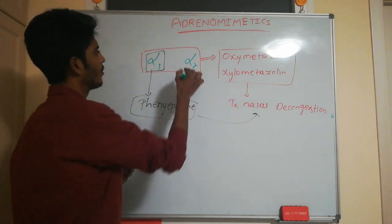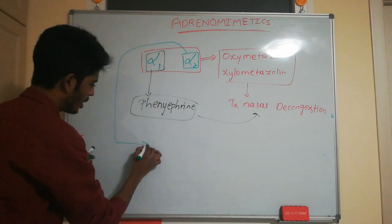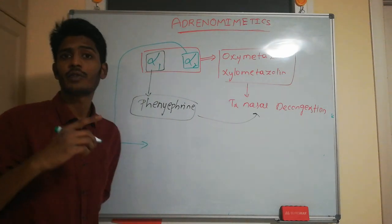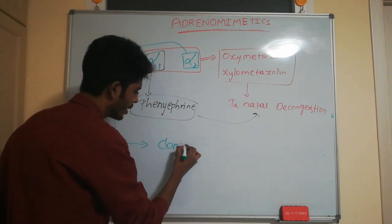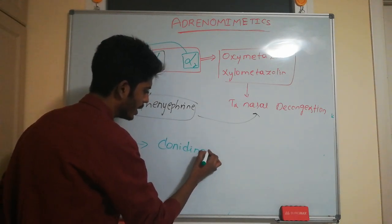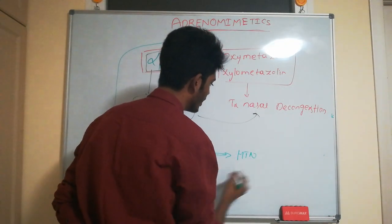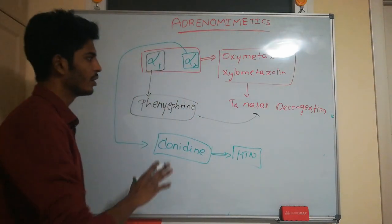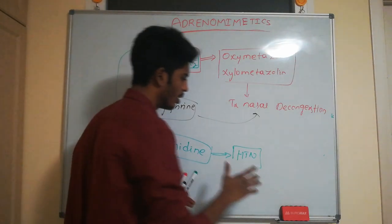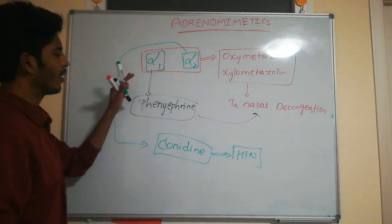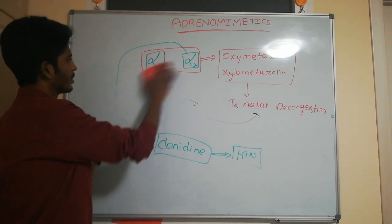Alpha 2 stimulants are used for the treatment of hypertension. The key drug here is clonidine, which is mainly used in the treatment of hypertension. That covers alpha mimetics.